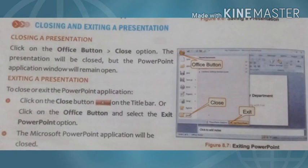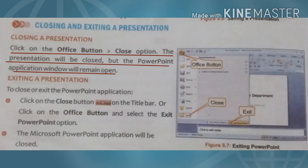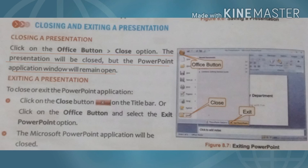Now next we learn how to close or exit a presentation. To close a presentation, click on the Office button and choose the Close option. The presentation will be closed but the PowerPoint application window will remain open. अगर आपका सिर्फ presentation बंद करना है, किसी और presentation पे काम करने के लिए, तो Office button पे click कीजे और Close option को select कीजे — सिर्फ existing presentation close होगा, application window open रहेगी।